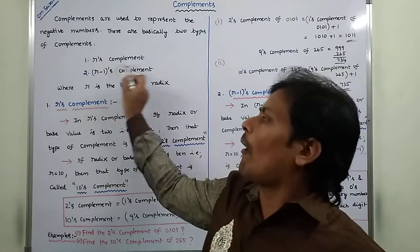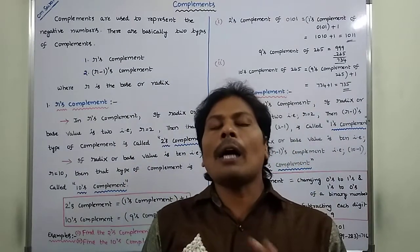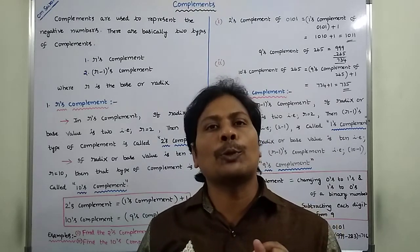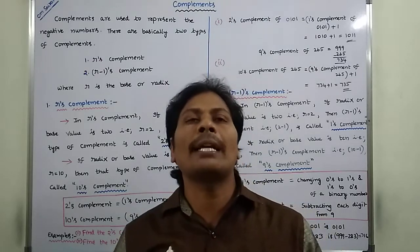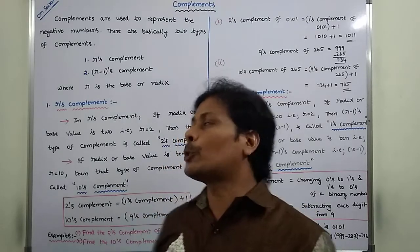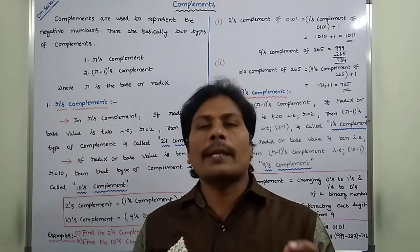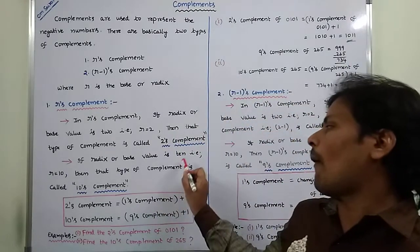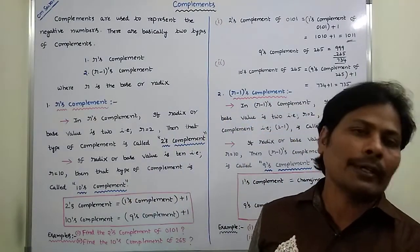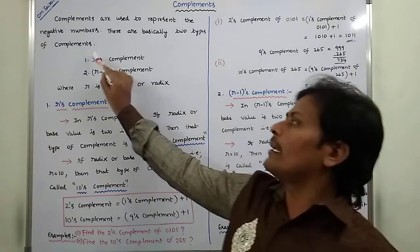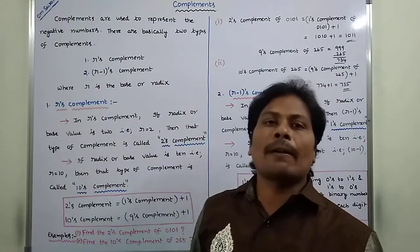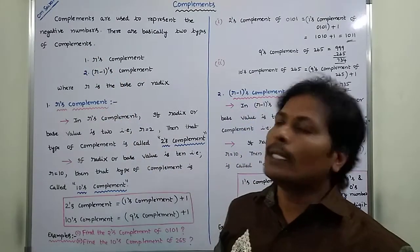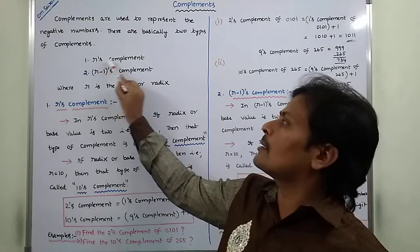Now coming to R's Complement. In R's Complement, if the Base or Radix R is equal to 2, then that type of complement is called 2's Complement. Suppose if R is equal to 10, then that type of complement is called 10's Complement. So in R's Complement, R is called the Base or Radix. If R is equal to 2, then it is called 2's Complement.